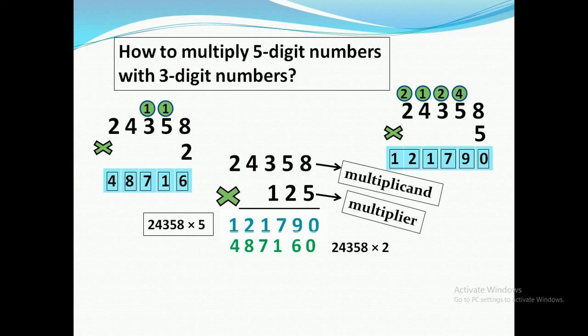Now it is the turn of the hundreds place, which is the number one. We will multiply the multiplicand by one and place zeros in both the tens and units places. As we know, whenever we multiply any number by one, we get the same number, so we write the multiplicand value down as the partial product.